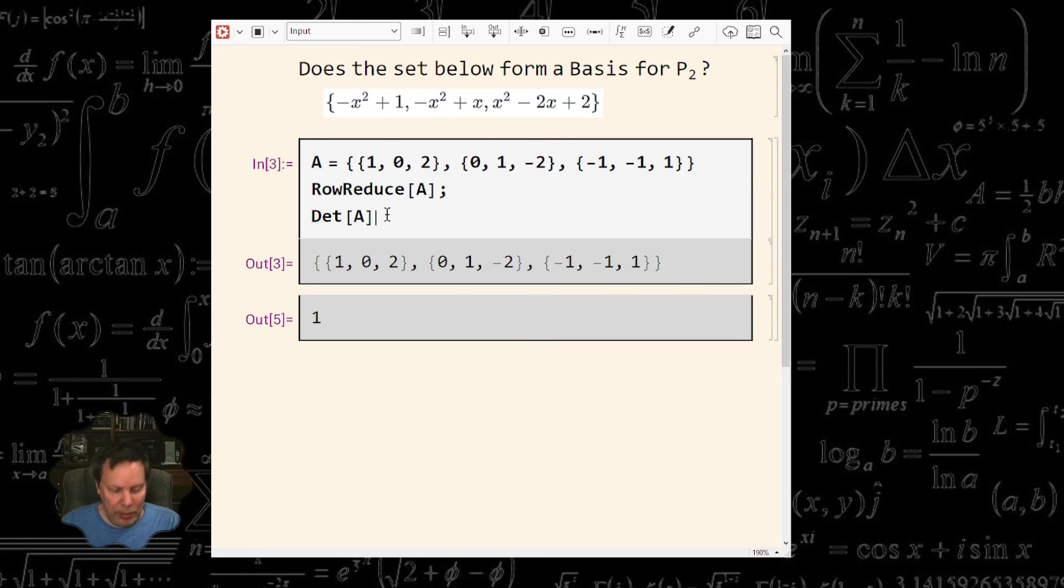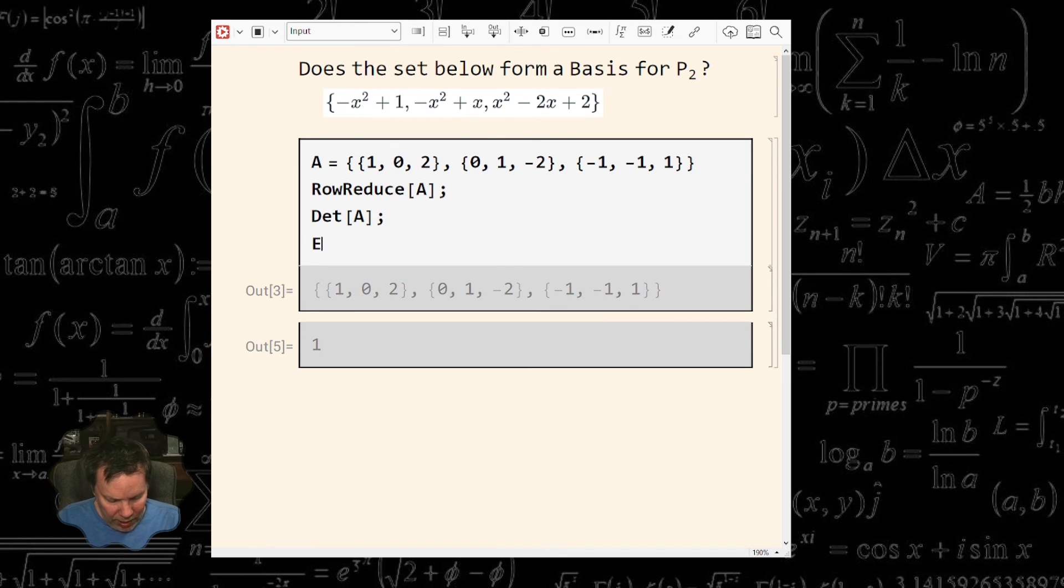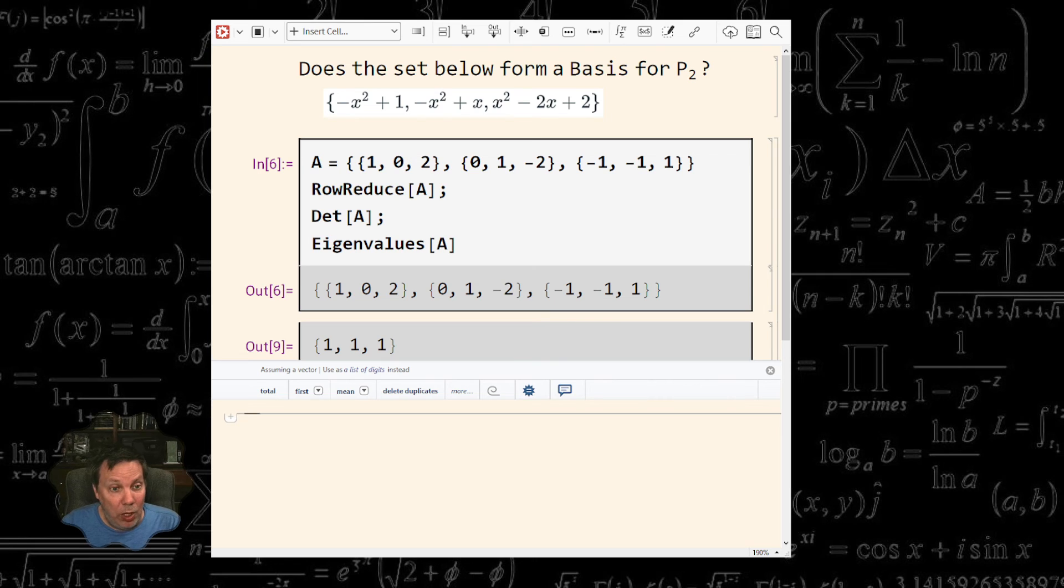Here's another way to do this. What I can do a little bit more advanced, I can look at the eigenvalues of this matrix A. And when I look at these eigenvalues, oh, they're all one. None of them are zero. So therefore, again, these are linearly independent vectors.